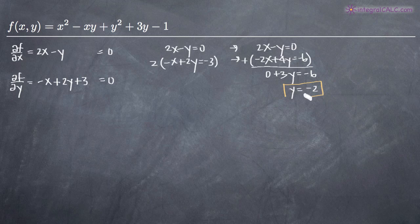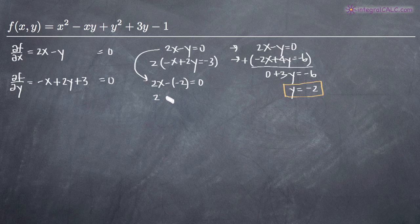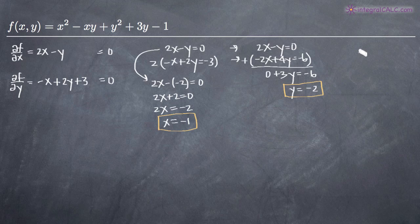Now I need to solve for x. I'll plug y = -2 back into the first equation: 2x - (-2) = 0, which gives 2x + 2 = 0. Subtracting 2 from both sides gives 2x = -2, and dividing both sides by 2 gives x = -1. So I'll be evaluating at the point (-1, -2), where x = -1 and y = -2.